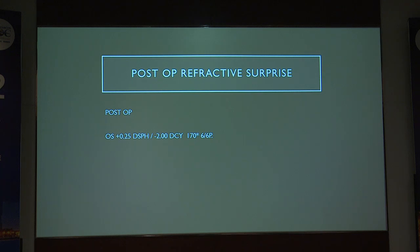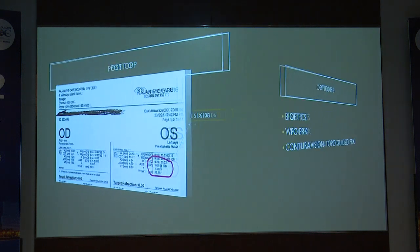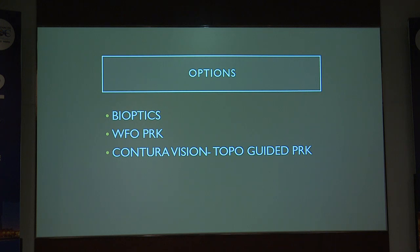She was having minus 2 spherical pre-op and ended up with a minus 2 cylinder post-op. We repeated all pre-operative tests and found the cylinder was exactly as planned at 106 degrees — we had placed it at 110 degrees. The only problem was the decentered ablation. The options for this patient are bioptics — doing a laser correction — either a wavefront-optimized PRK to correct the spherical power, or a topo-guided PRK (contour vision) which corrects the cylinder and normalizes the cornea more effectively.